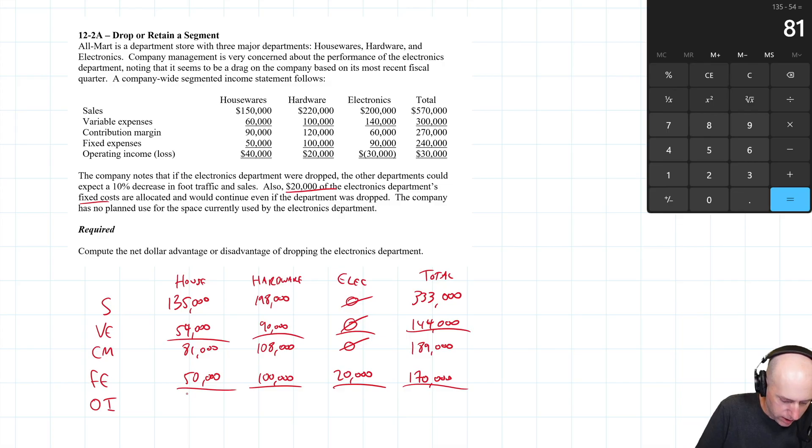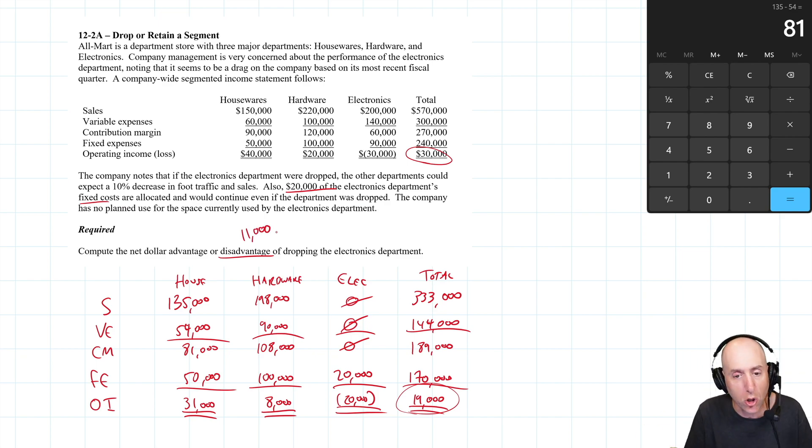Doing the math here, 81 minus 50 is $31,000 in operating income for housewares. 108 minus 100 is $8,000 for hardware. And 0 minus 20 is negative 20 for electronics. So we end up with $19,000 of overall profit for the company. So should we do it? What are we comparing it to? We were making $30,000 with it. We're going to be making $19,000 without it. We're $11,000 worse off if we drop it. So it's a disadvantage of $11,000. Therefore, we shouldn't drop the department.